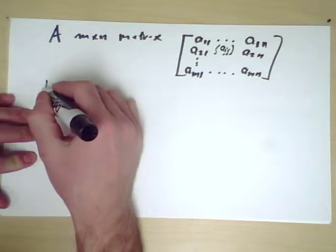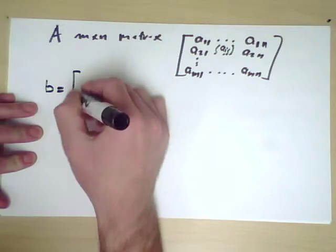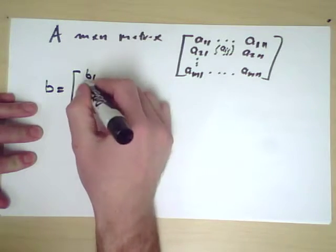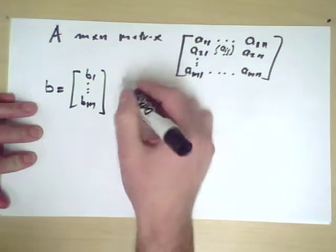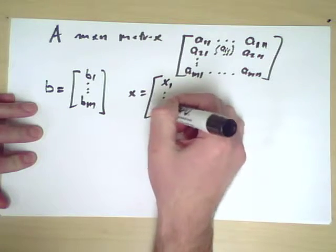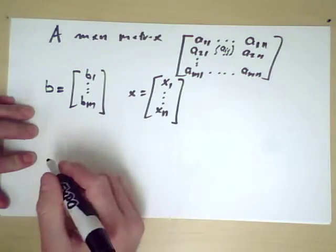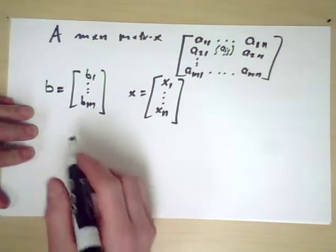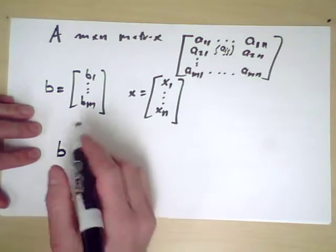Therefore, b would take the form b_1 up to b_m, and x would take the form x_1 up to x_n, and we can compute the elements of b in a straightforward way by writing down the dot product.